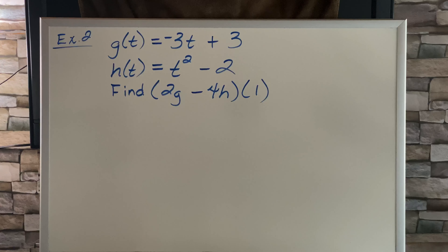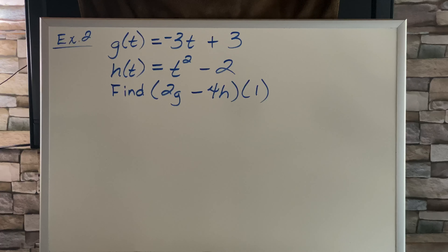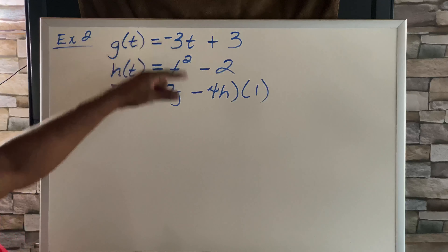Let's take a look at Example 2. It says g of t equals negative 3t plus 3, h of t equals t squared minus 2, and find 2g minus 4h of 1. Same rules apply — they just added an extra step, so that's no problem.